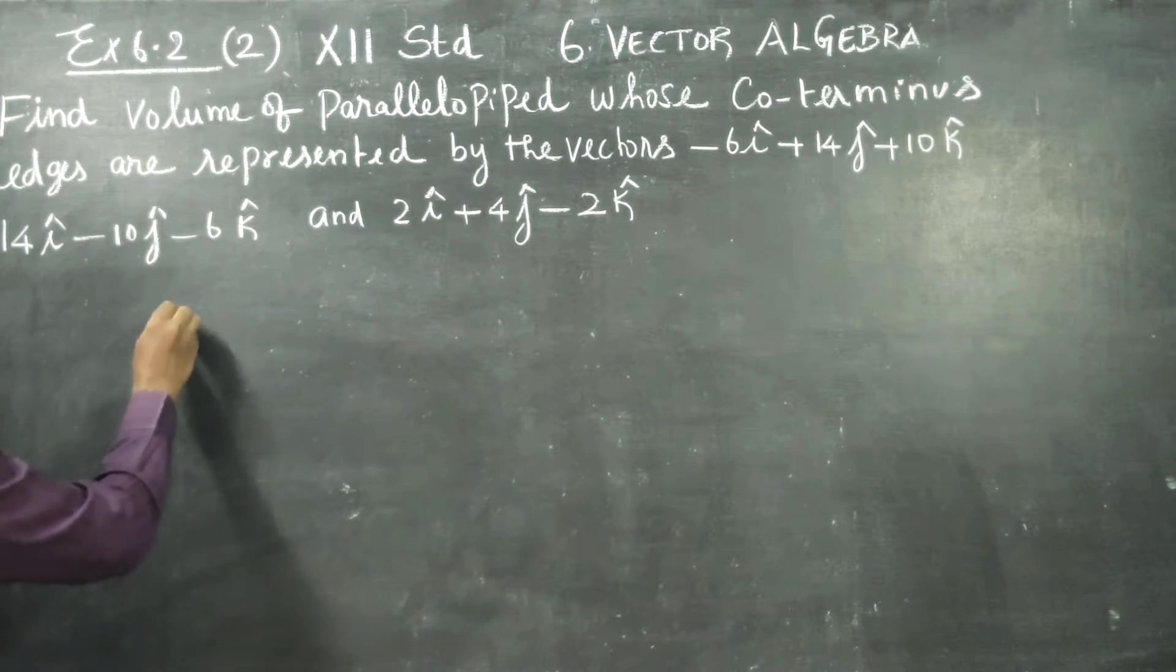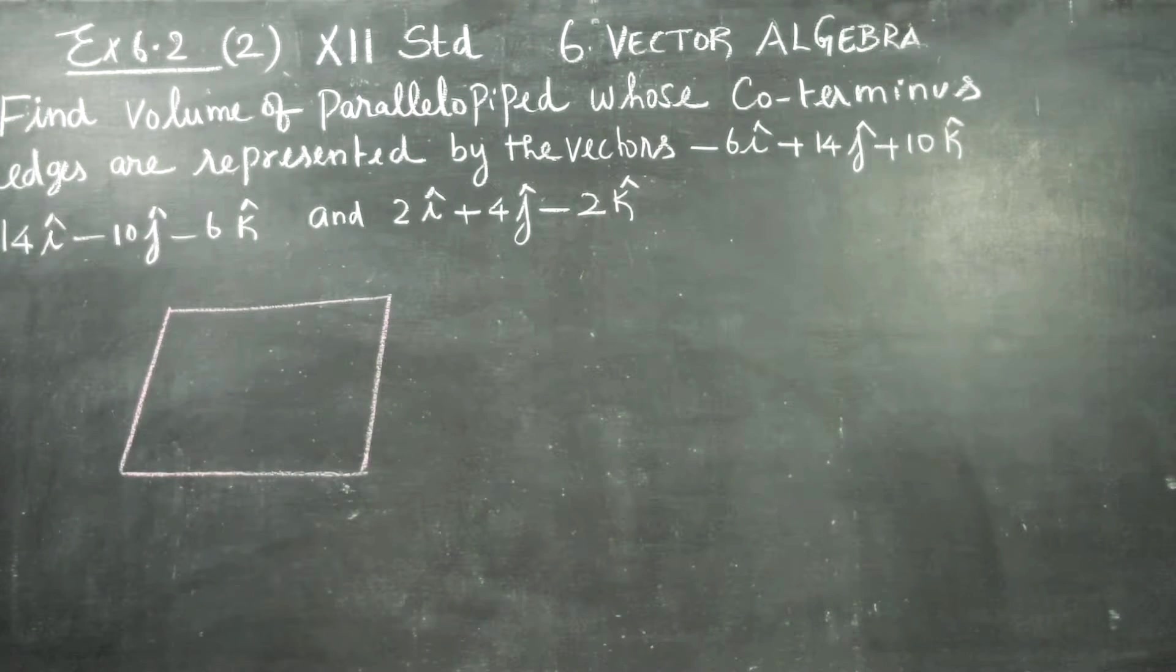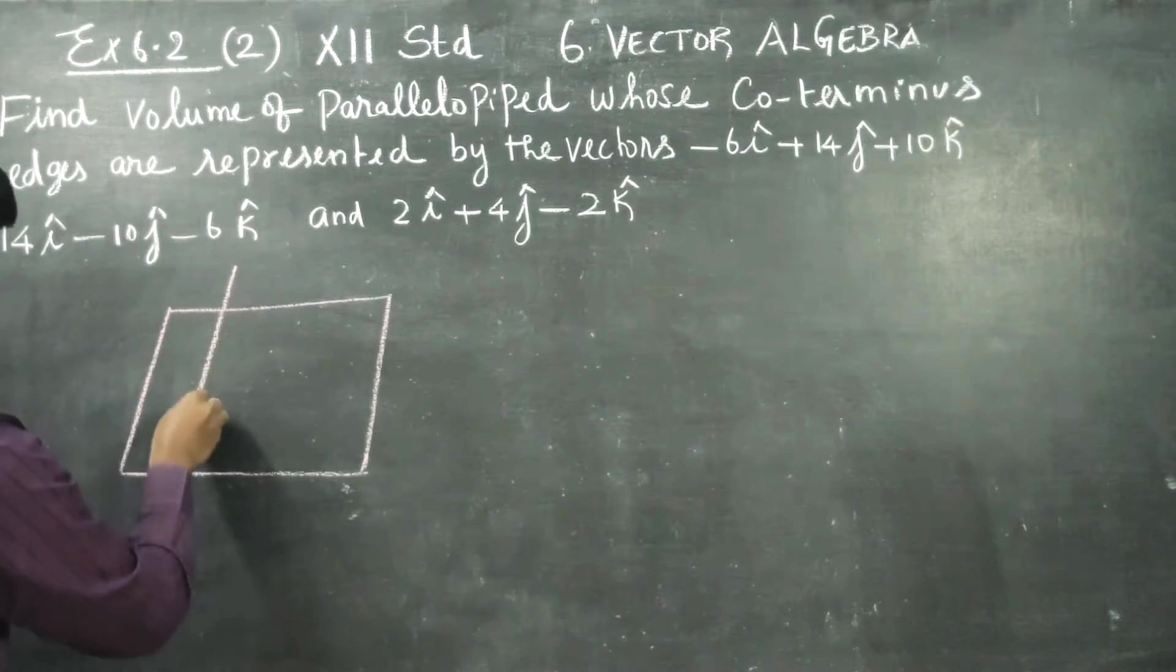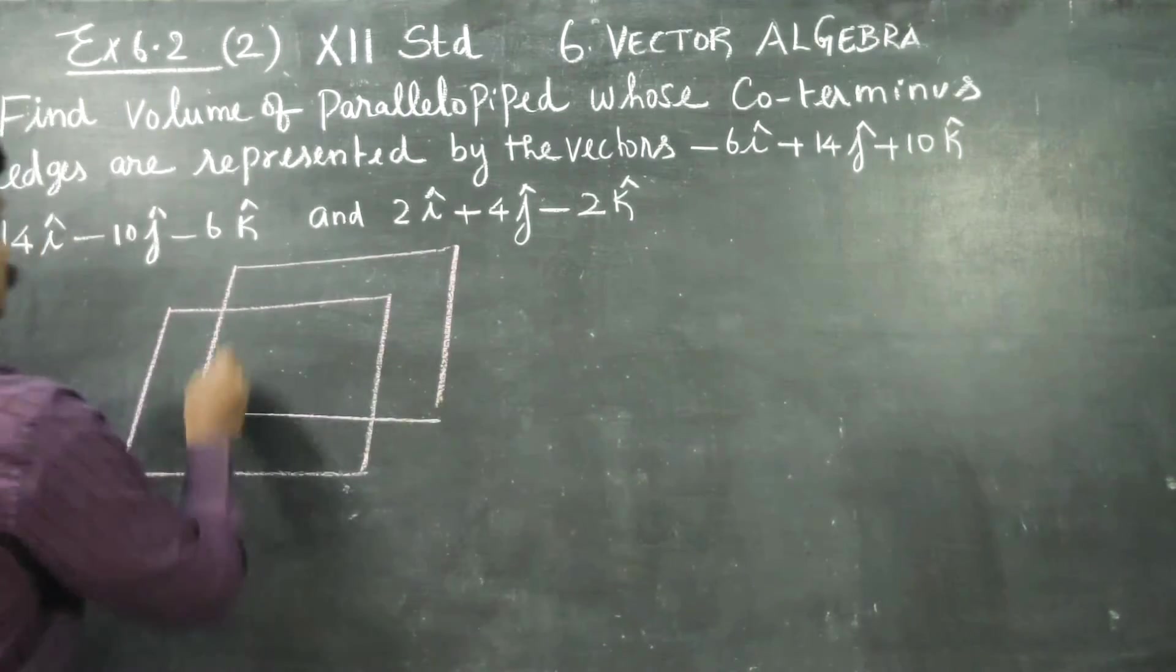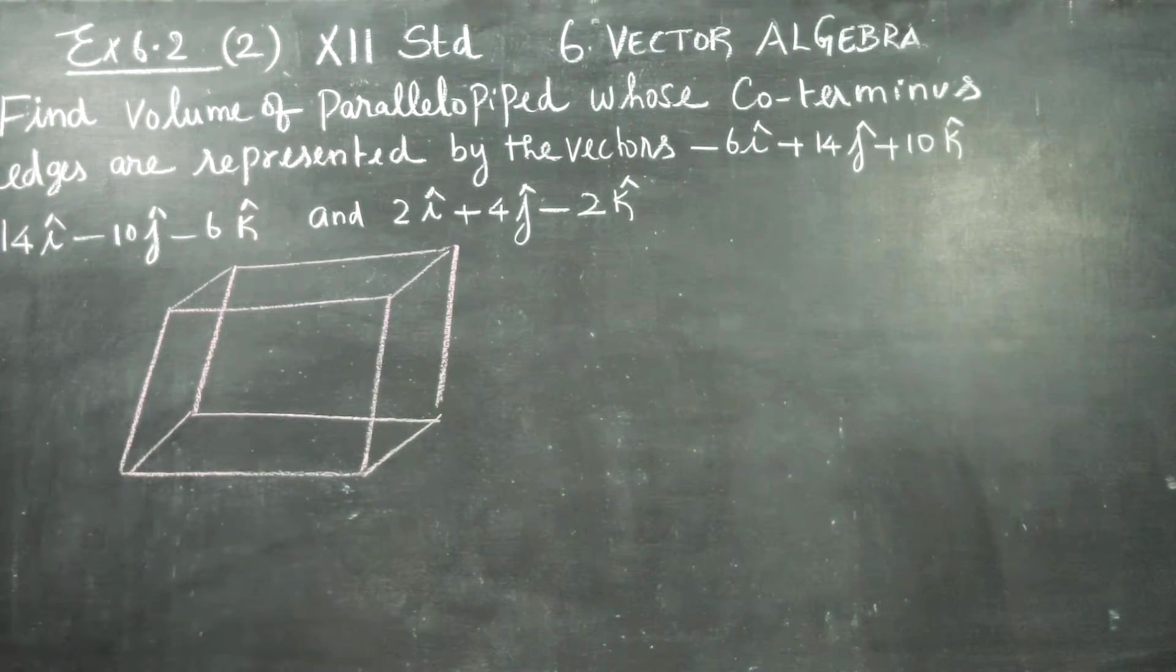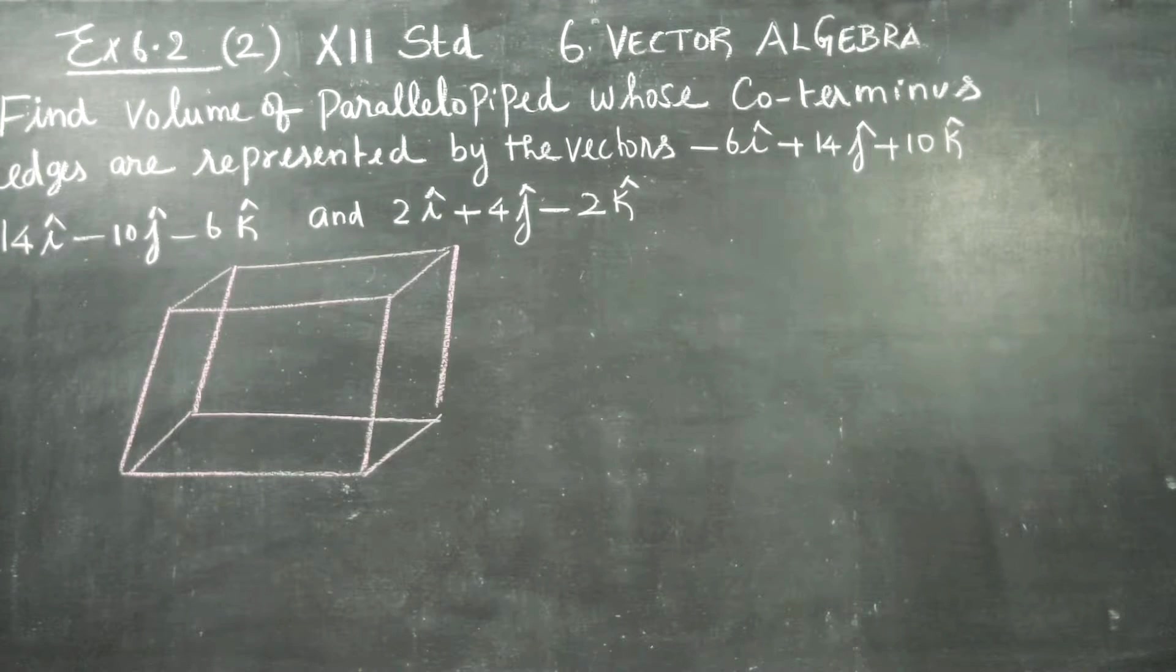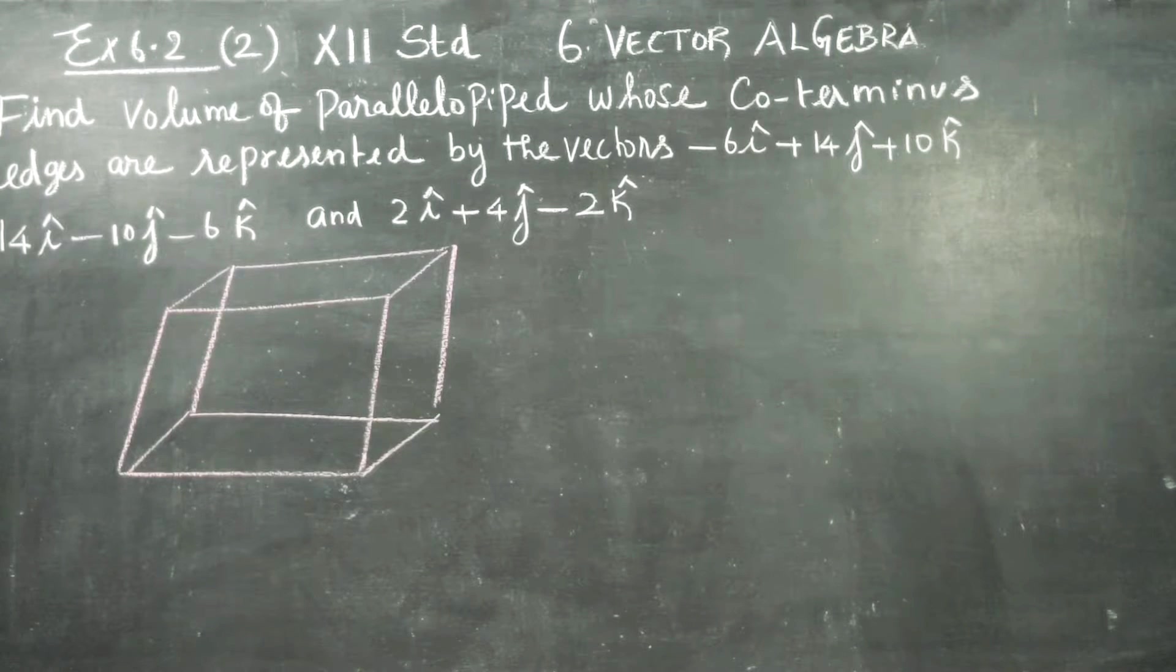You just draw a parallelogram like this, a parallelogram, followed by another parallelogram. Join the corner points, you will get a three-dimensional diagram like this. If you have a sponge and press it, the shape you get is called parallelepiped.